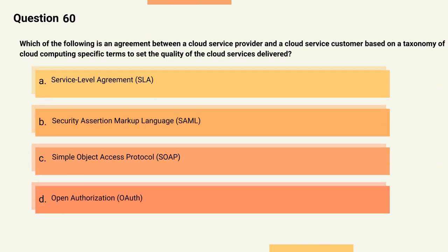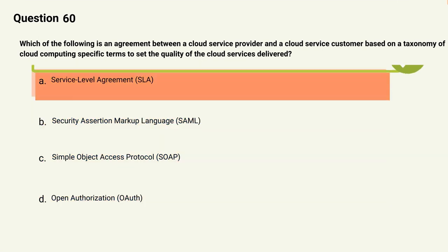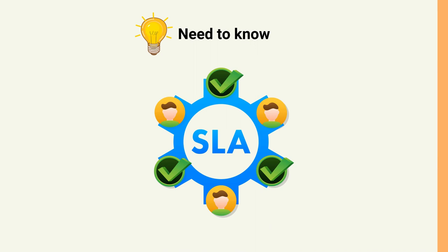Question 60: Which of the following is an agreement between a cloud service provider and a cloud service customer based on a taxonomy of cloud computing-specific terms to set the quality of the cloud services delivered? Options: A) Service-level agreement (SLA), B) Security assertion markup language (SAML), C) Simple object access protocol (SOAP), D) Open Authorization (OAuth). The correct answer is Option A, Service-level agreement (SLA). Explanation: An SLA is an agreement between a cloud service provider and a cloud service customer based on a taxonomy of cloud computing-specific terms to set the quality of the cloud services delivered.